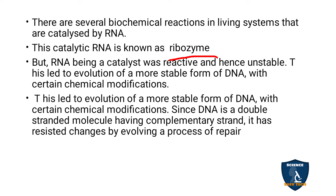But RNA, being a catalyst, is reactive and hence unstable. RNA changes very quickly — within a short time. Due to this, evolution produced a more stable form: DNA. RNA undergoes chemical modification rapidly and transitions to DNA. DNA is more stable; its chemical modification is standard. DNA is double-stranded while RNA is single-stranded, and DNA can be repaired by its own mechanisms because of the RNA present in the cell.